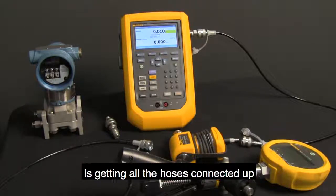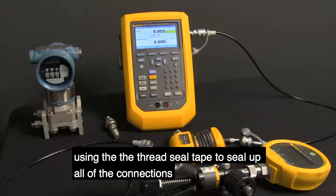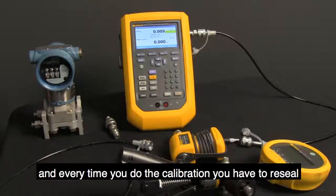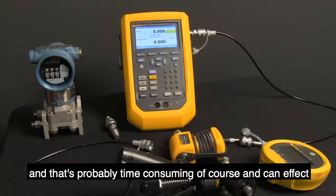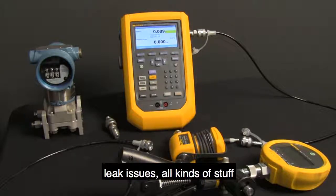is getting all the hoses connected up, using the thread seal tape to seal up all the connections. Every time you do the calibration you have to reseal, and that's time consuming and can affect leak issues, all kinds of stuff.